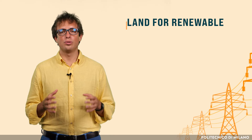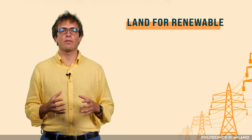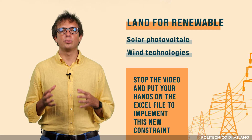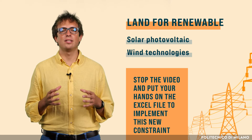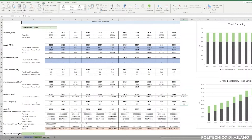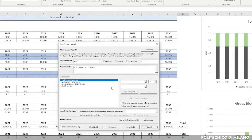The last scenario is devoted to consider a constraint for the overall amount of land used for renewable installation. Land use is indeed an issue, especially for what concerns the installation of solar photovoltaic and wind technologies. As usual, before I show you the solution, try to stop the video and put your hands on the Excel file to implement this new constraint. To introduce this new constraint on land use, the general structure of the problem remains unchanged. As you might have noticed from the baseline, in the Excel file it is already computed the overall amount of land used because of renewables technologies installation. Thus, the only thing you can do is open the model window from the data ribbon and add another constraint to the solver.